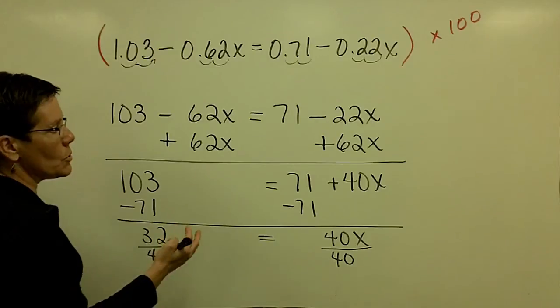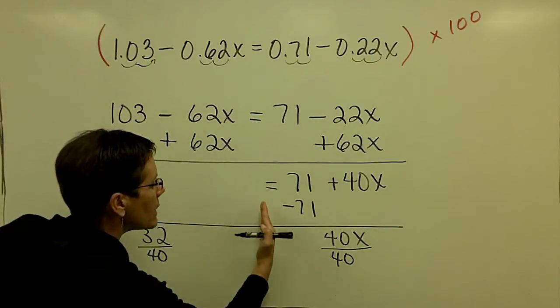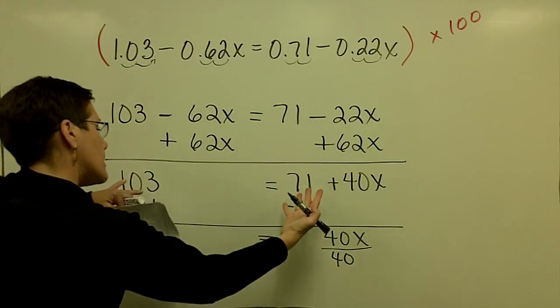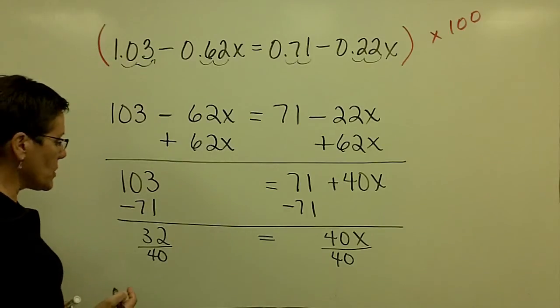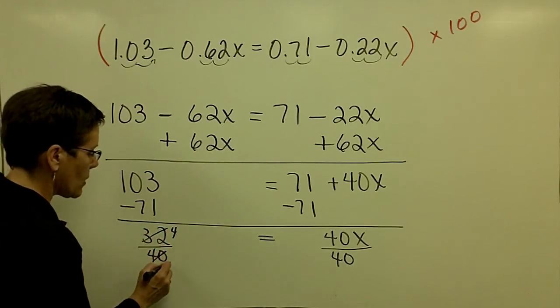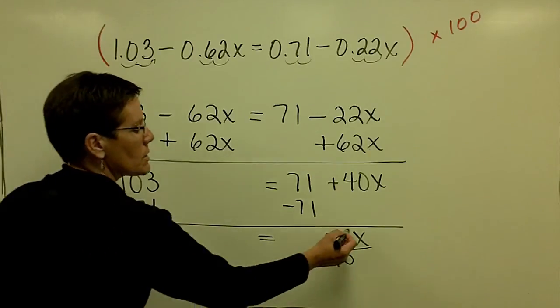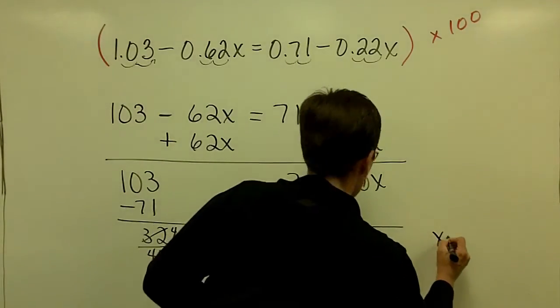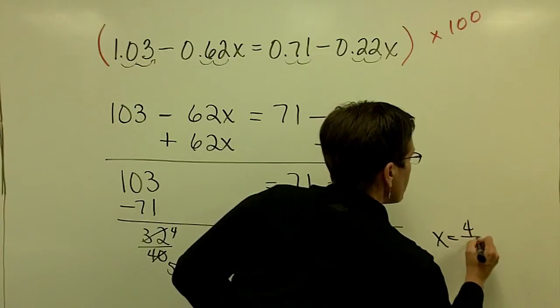I kind of keep this drawn out so you can keep your equal sign right in the center and be doing the same things to both sides of the equation. And then don't forget to reduce this. 8 goes into here 4 times and 8 goes into here 5 times. So it looks like my solution for x is 4 over 5.